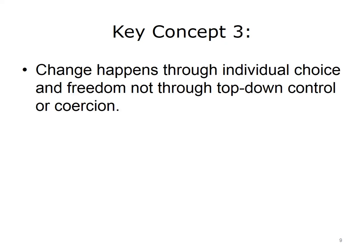Change happens through individual choice and freedom, not through top-down control or coercion. This is not a statement that all organizations should be democracies. As we saw in Unit 7, there are many different leadership styles, ranging from one person making all the decisions to group decisions. What this key concept is saying is that it is imperative that every person's right to choose, at some level, be respected. The choice may be whether or not to be part of the effort, whether or not to provide input, or, in an extreme case, whether or not to continue working at an organization. Change leaders should be clear about what choices employees have and should respect those choices.